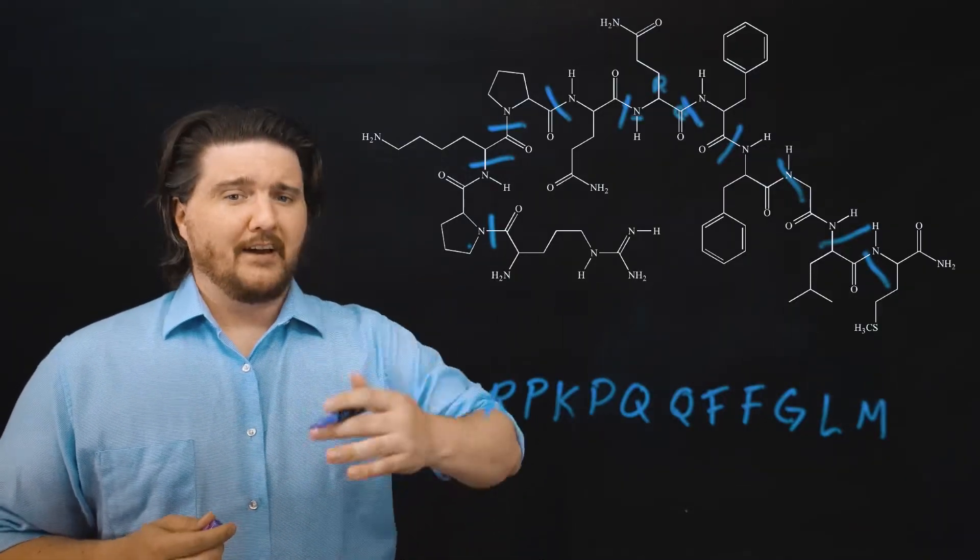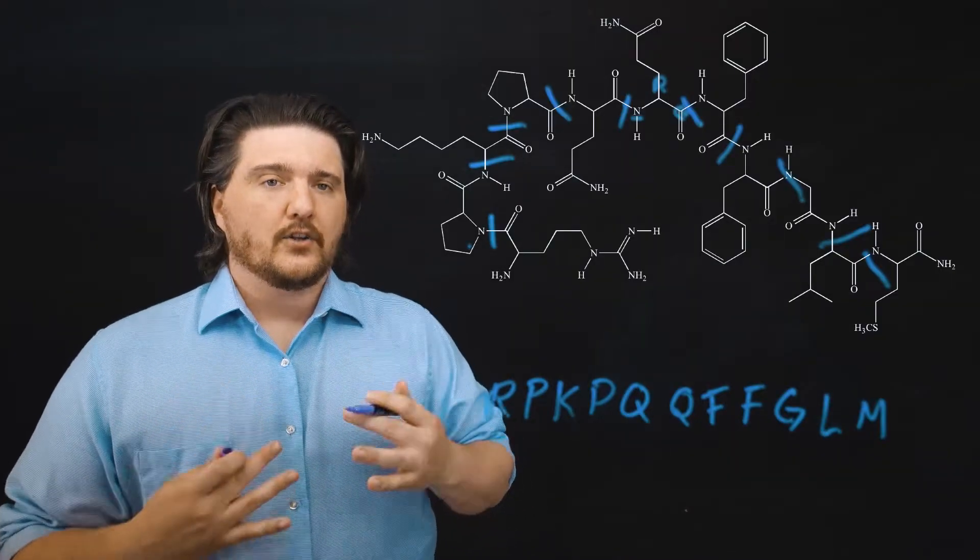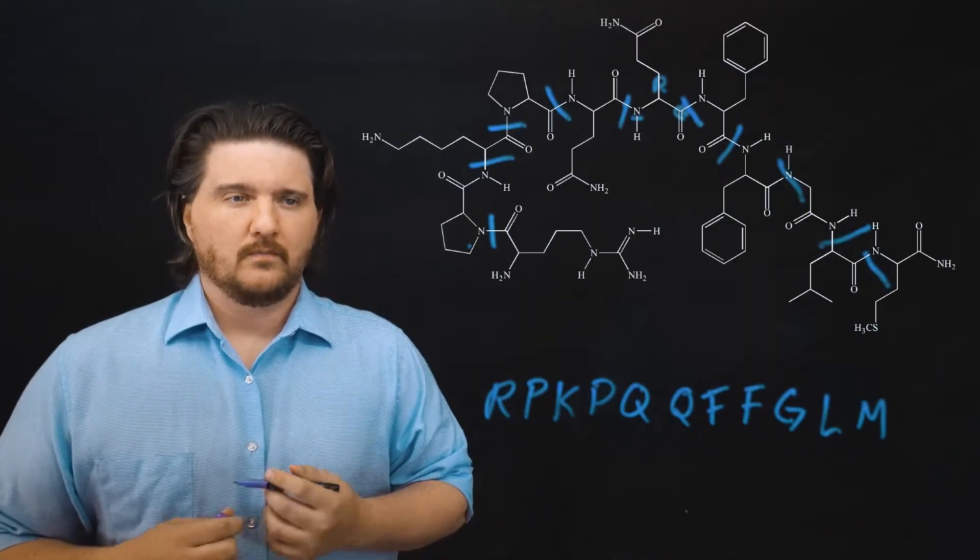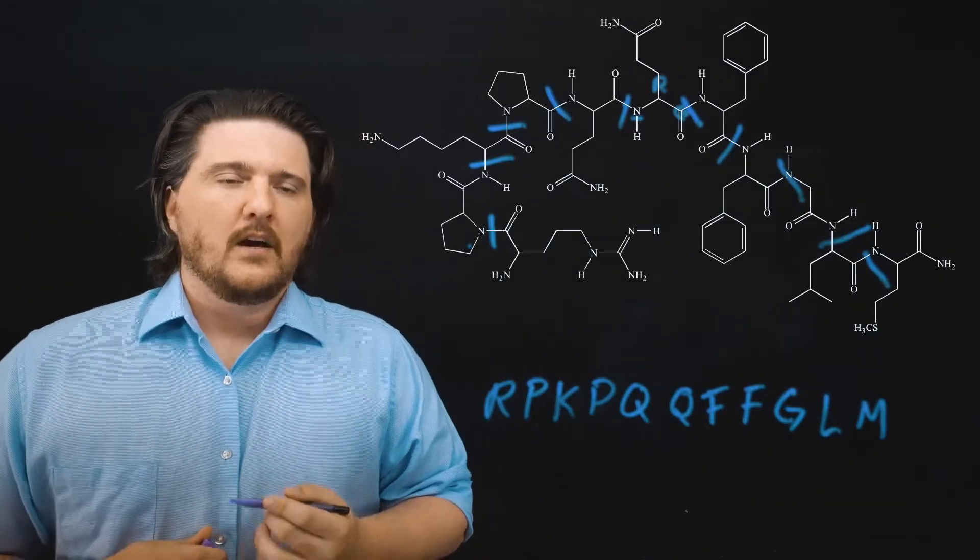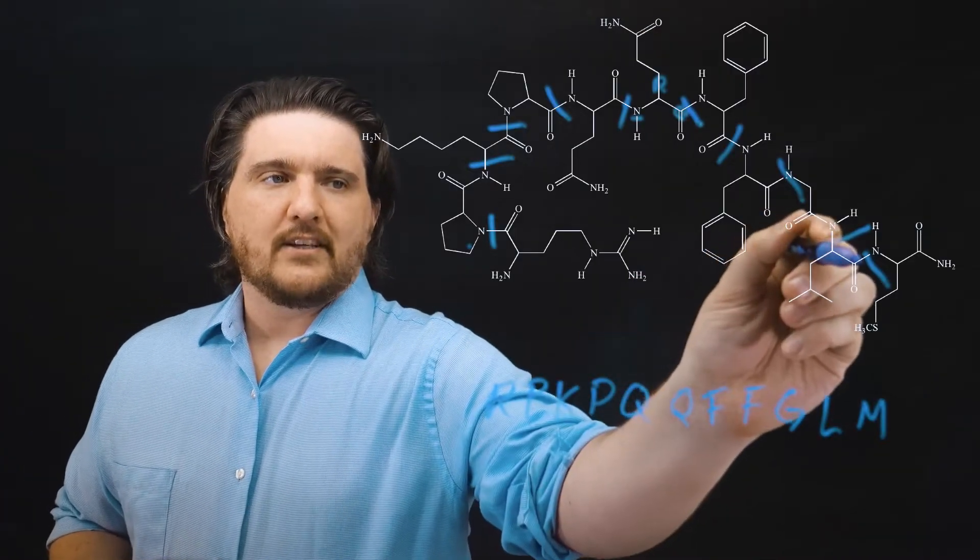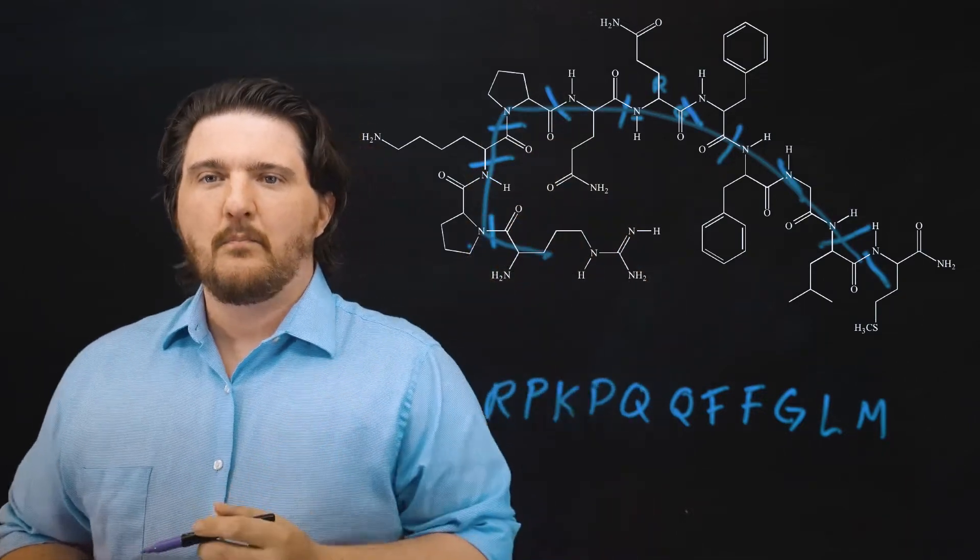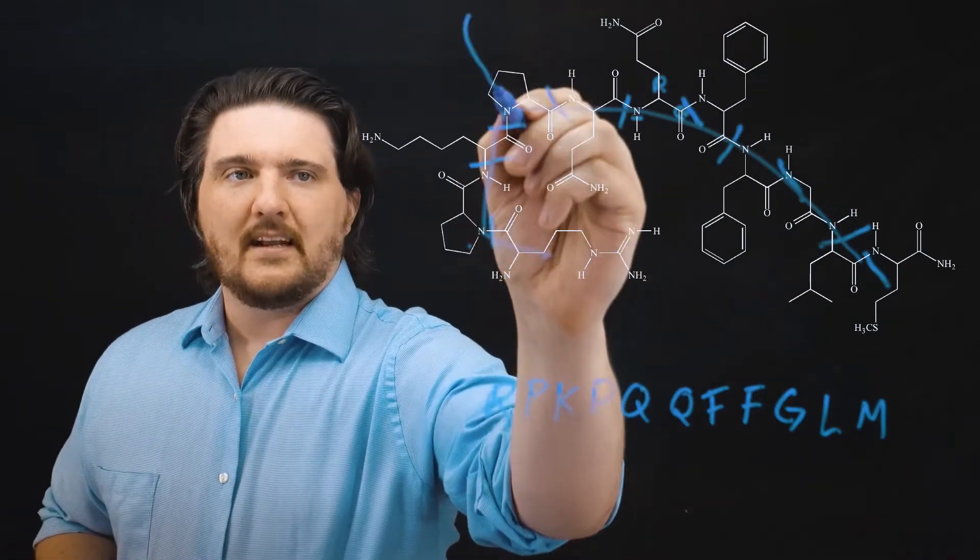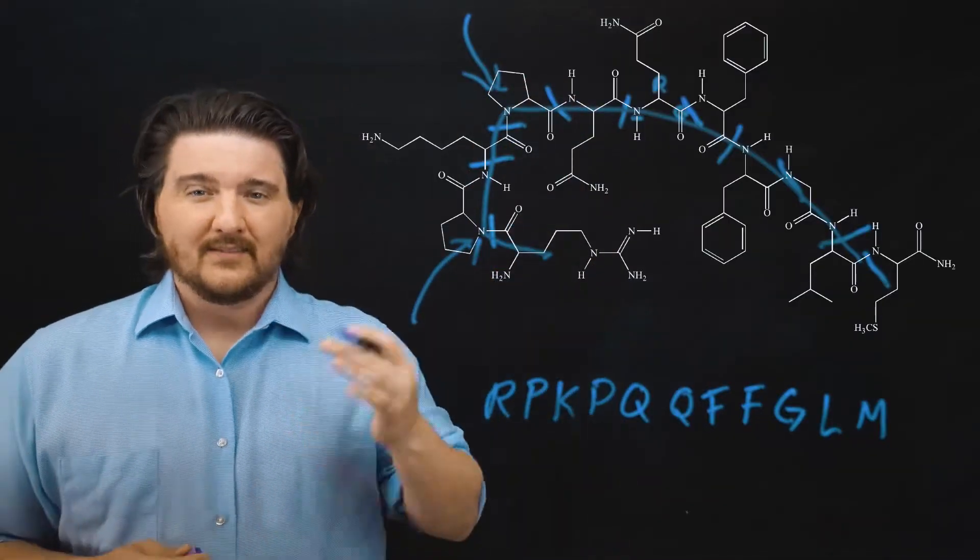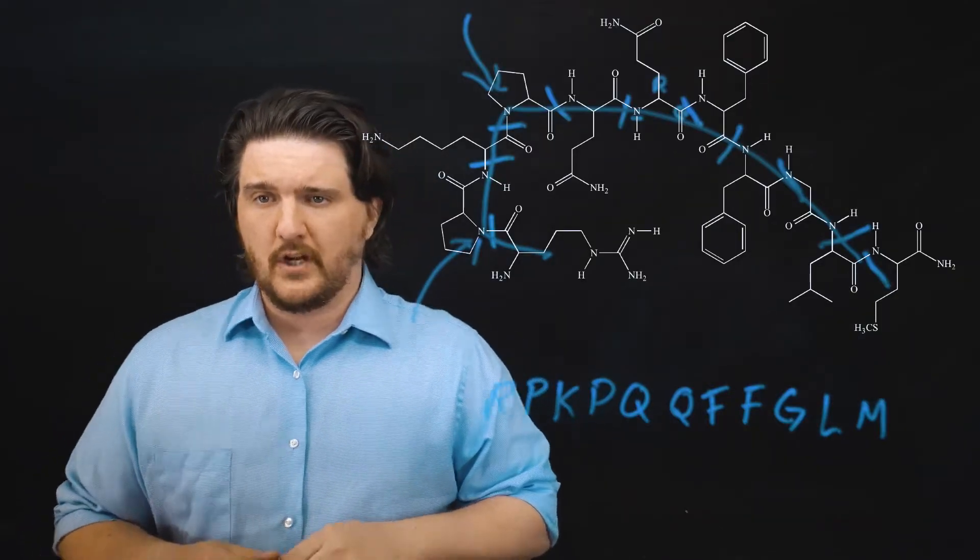So the MCAT could give you either of these. They could give you the structure and ask you about it. Or they could just say, here's the protein. R, P, K, P, Q, Q, F, F, G, L, M. And that's the protein. These are the same thing. You need to understand that the MCAT can give you either of these. And you need to be able to identify and like understand that they're the same thing. Another thing that I'll note here, this is just like a great visualization, that if you look at that like general shape of this protein, note that it kind of bends here. This bend here, proline. This bend here, proline. It's a good indication of showing you what's going on with proline as it induces kinks in a protein chain.